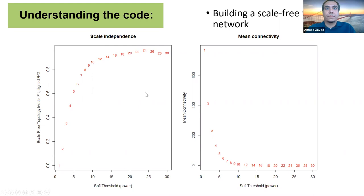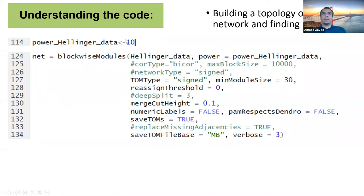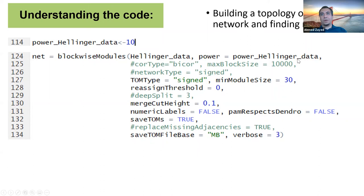Now we pick the value of 10 as the power we are going to use to construct the actual network. This is the step that takes most of the computational time — actually building the topology overlap matrix and the network. All of what we've done so far was just to get the value that satisfies the assumption of scale-free topology. The chunk of lines here is basically concerned with the parameters involved in building the network. You start with the function blockwiseModules, and you give it a lot of different arguments: the table, the Hellinger-transformed table; the power you have chosen; the correlation type — this is where you can choose Pearson, Spearman, or the biweight mid-correlation; and the block size.